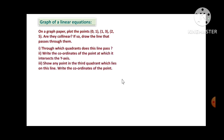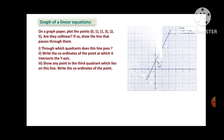Now we will see the graph of linear equations. On a graph paper, plot the points (0,1), (1,3), and (2,5). After plotting these three points — (0,1), (1,3), and (2,5) — the graph looks like this.